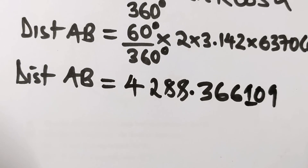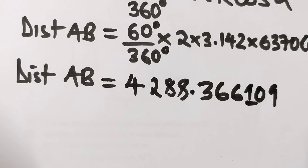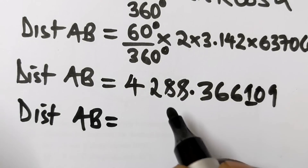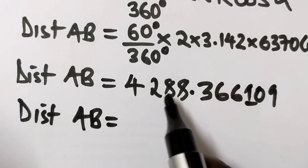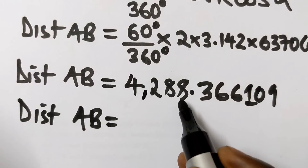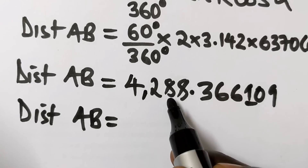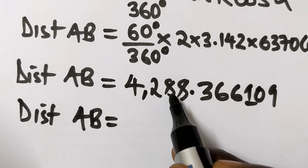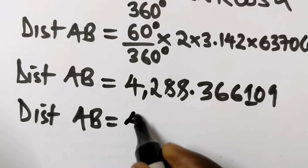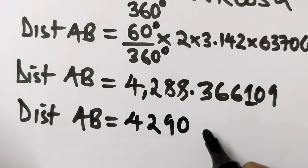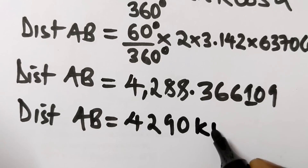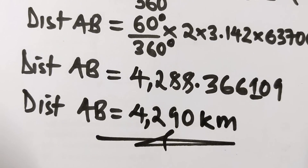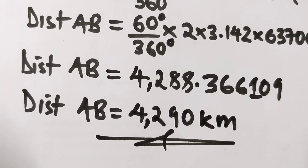In the exam, you have to write your answer correct to 3 significant figures. So distance AB — we have many significant figures but we just want 3. The number is in thousands, so we round off: the 8 rounds up, giving 4,290. So distance AB equals 4,290 kilometers.